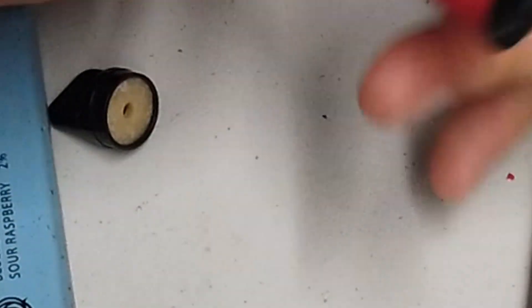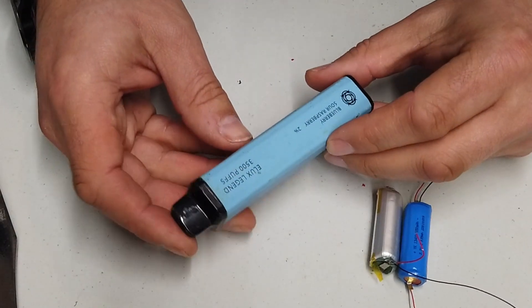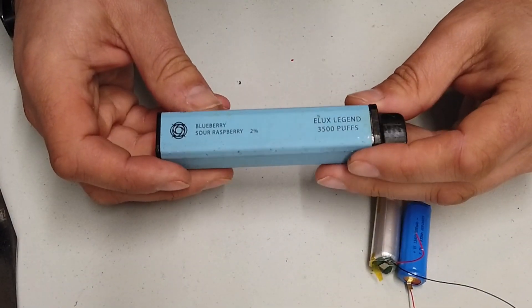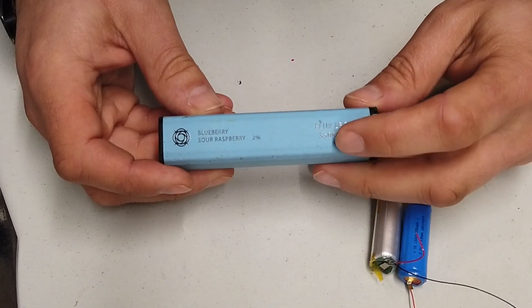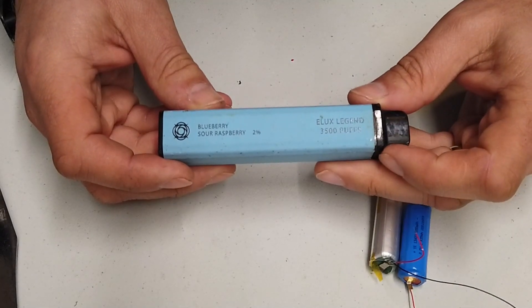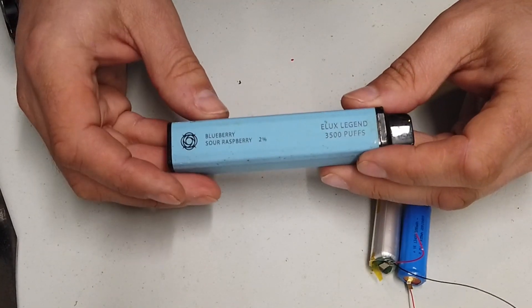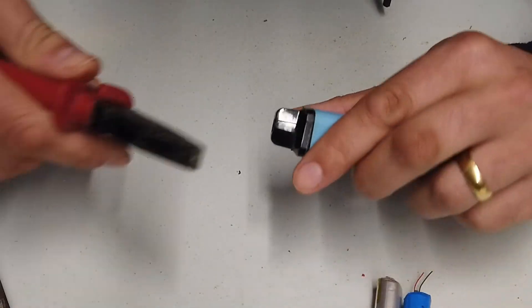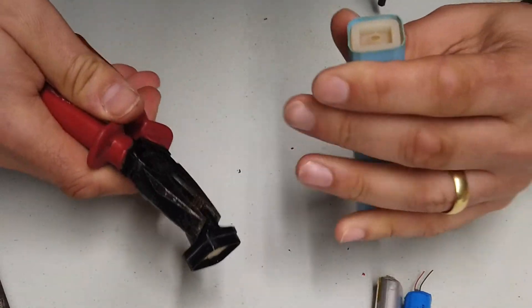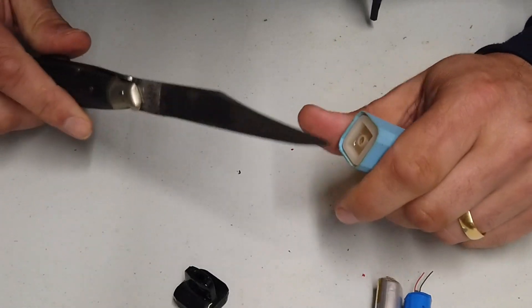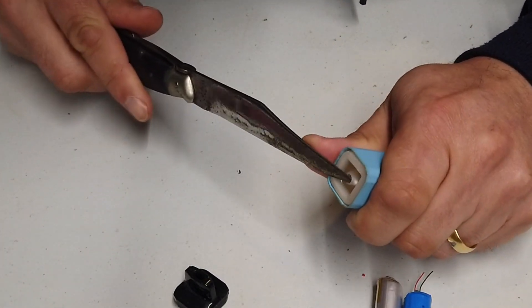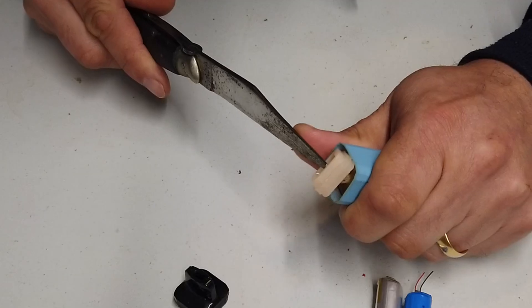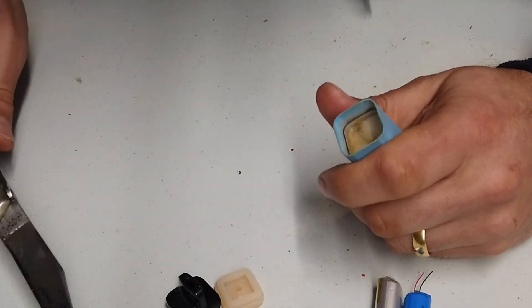All right, very cool. Let's open this guy. This is an Elux Legend, 3500 puffs, blueberry sour raspberry. So let's get this thing apart without hurting ourselves, I hope. All right, the lid came off relatively easily. All of this stuff I've picked up off the street, and I have to wash my hands after all of this.